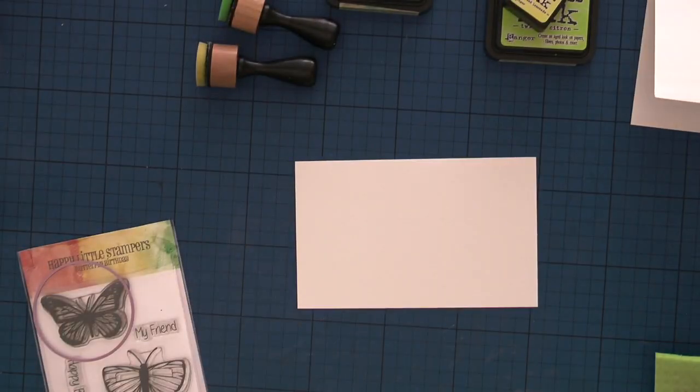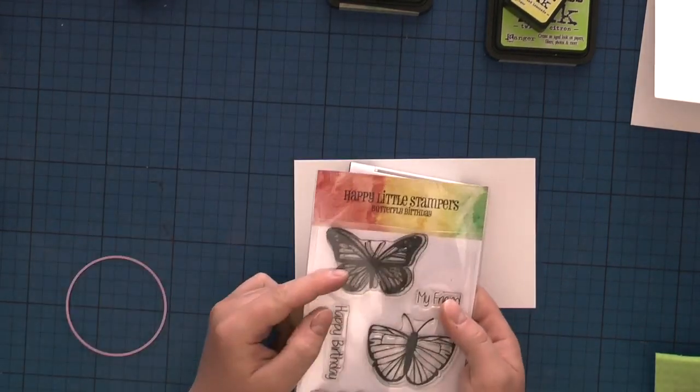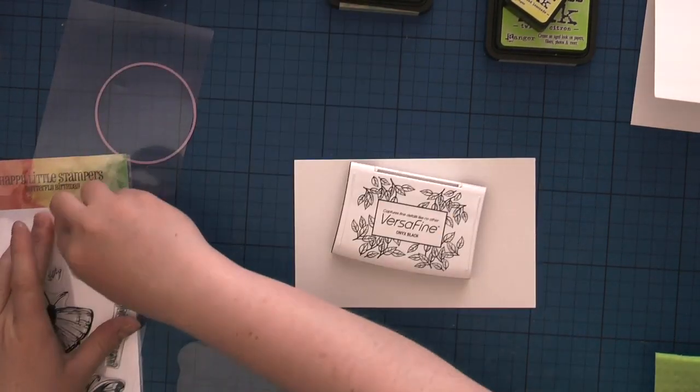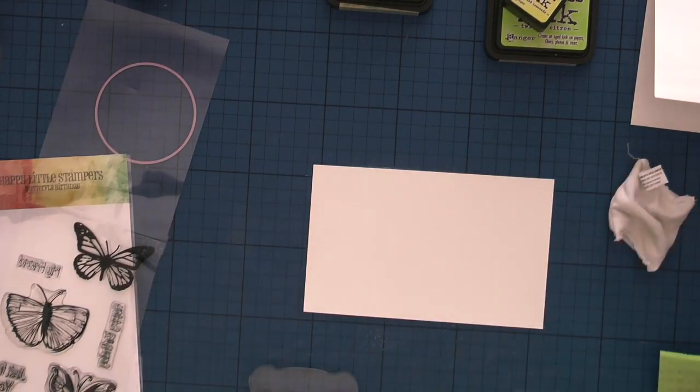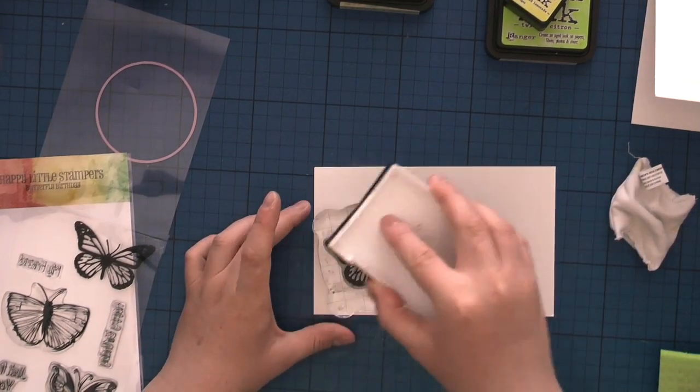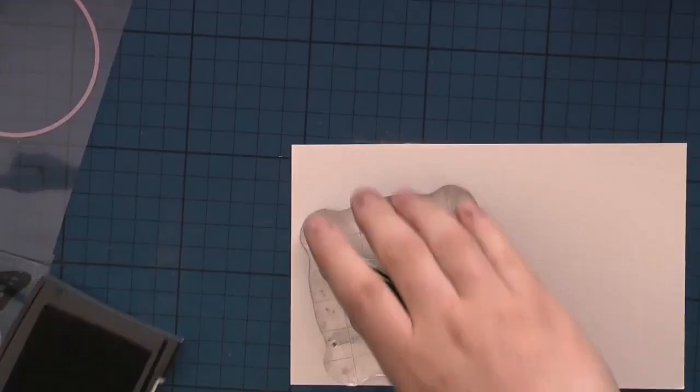My panel is four and a half by four and a half inches, just like the card base. Now I am going to stamp one of the butterflies. I'm going to use VersaFine black onyx ink to stamp it on heavy watercolor paper.